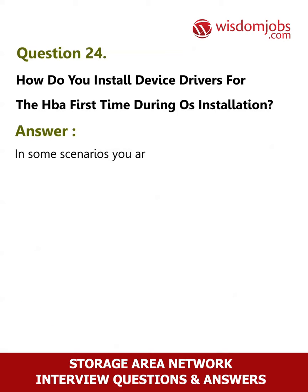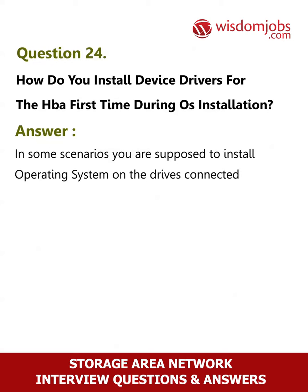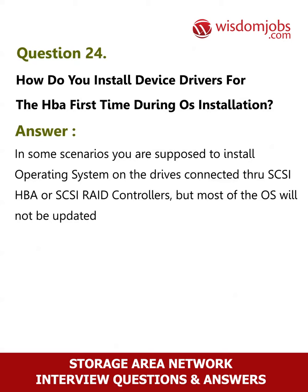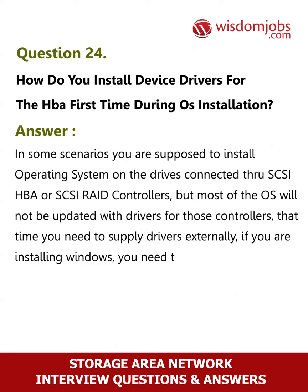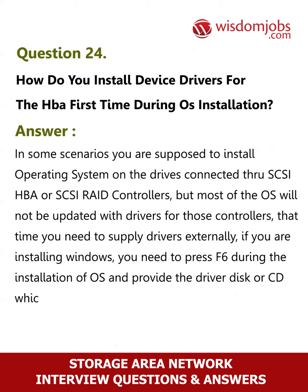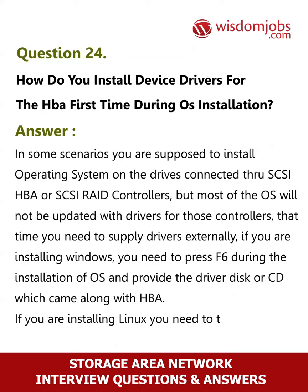Question 24: How do you install device drivers for the HBA for the first time during OS installation? Answer: In some scenarios you are supposed to install the operating system on drives connected through SCSI HBA or SCSI RAID controllers, but most OSes will not be updated with drivers for those controllers. At that time you need to supply drivers externally. If you are installing Windows, you need to press F6 during the installation and provide the driver disk or CD that came along with the HBA. If you are installing Linux, you need to type 'linux dd' for installing any driver.